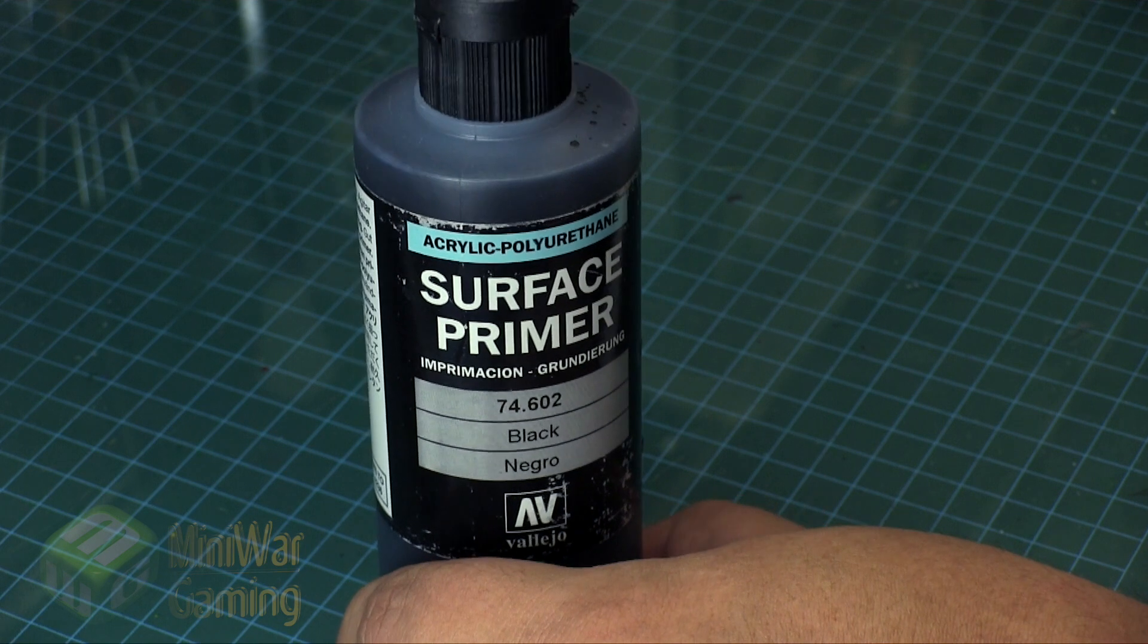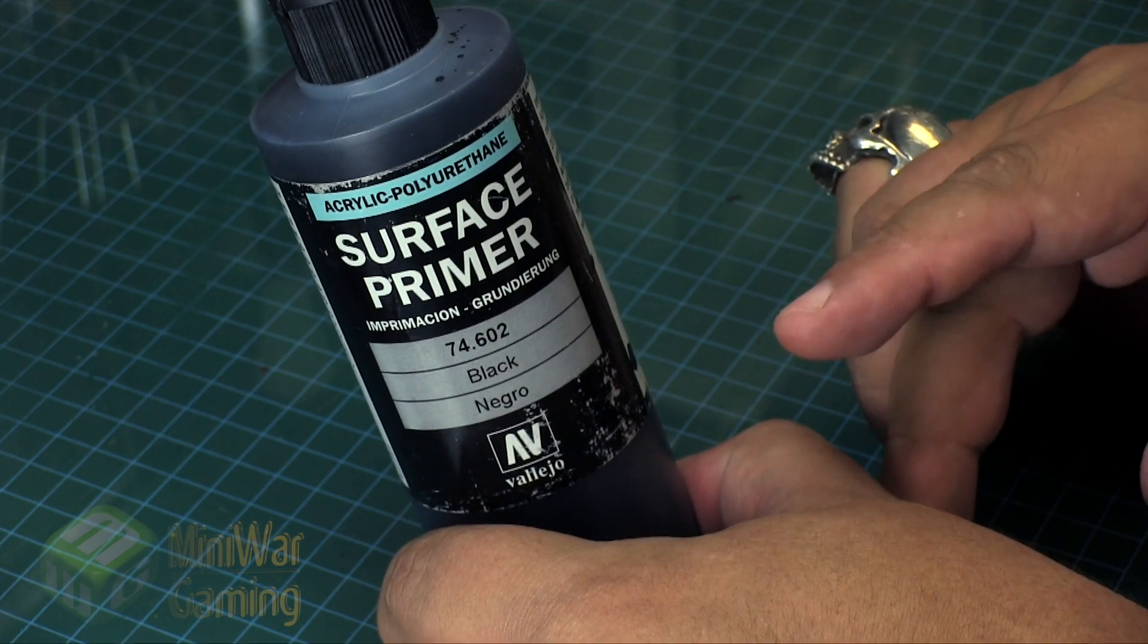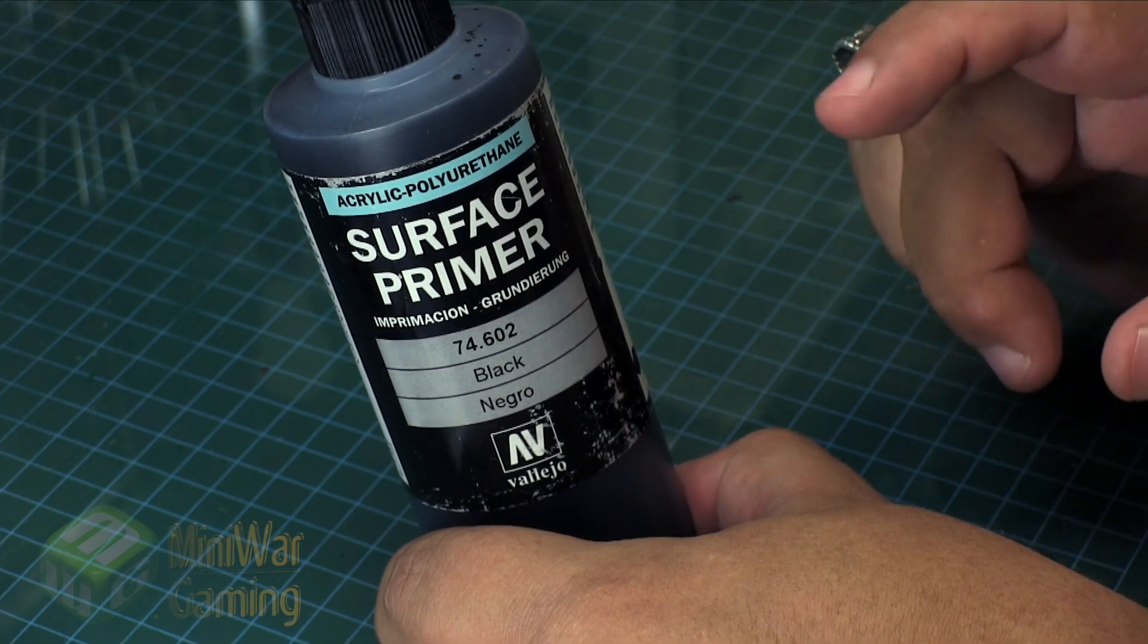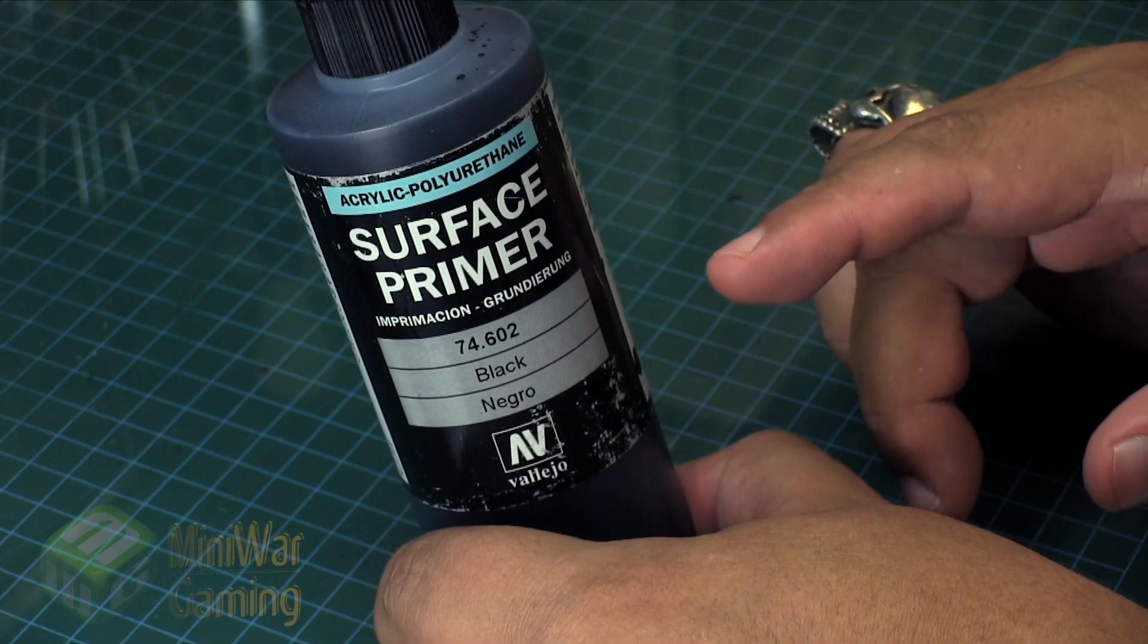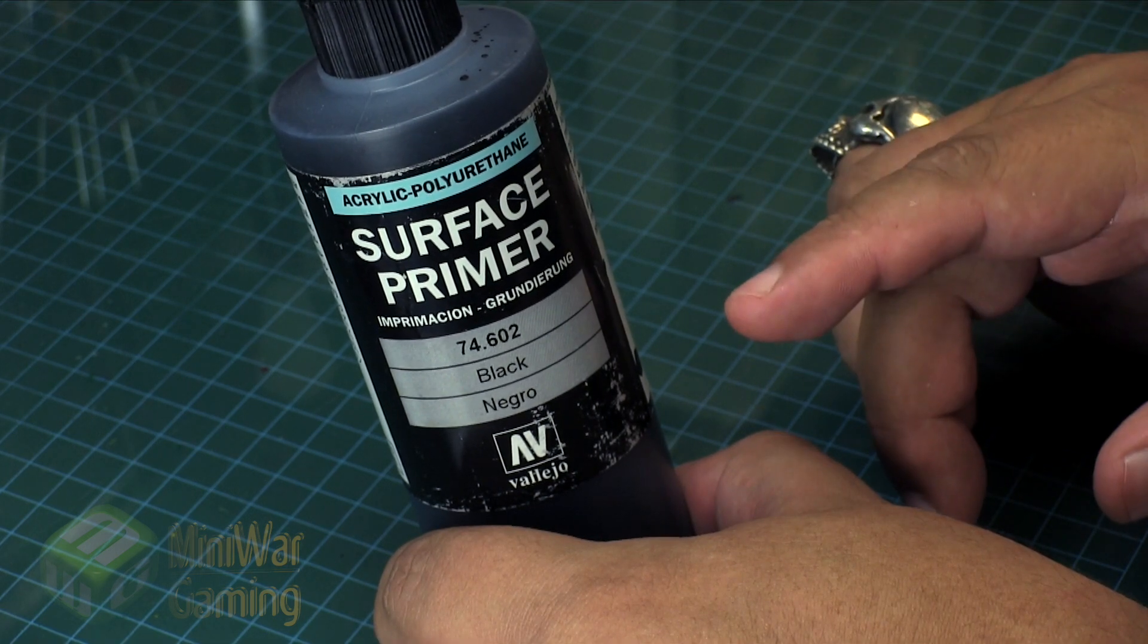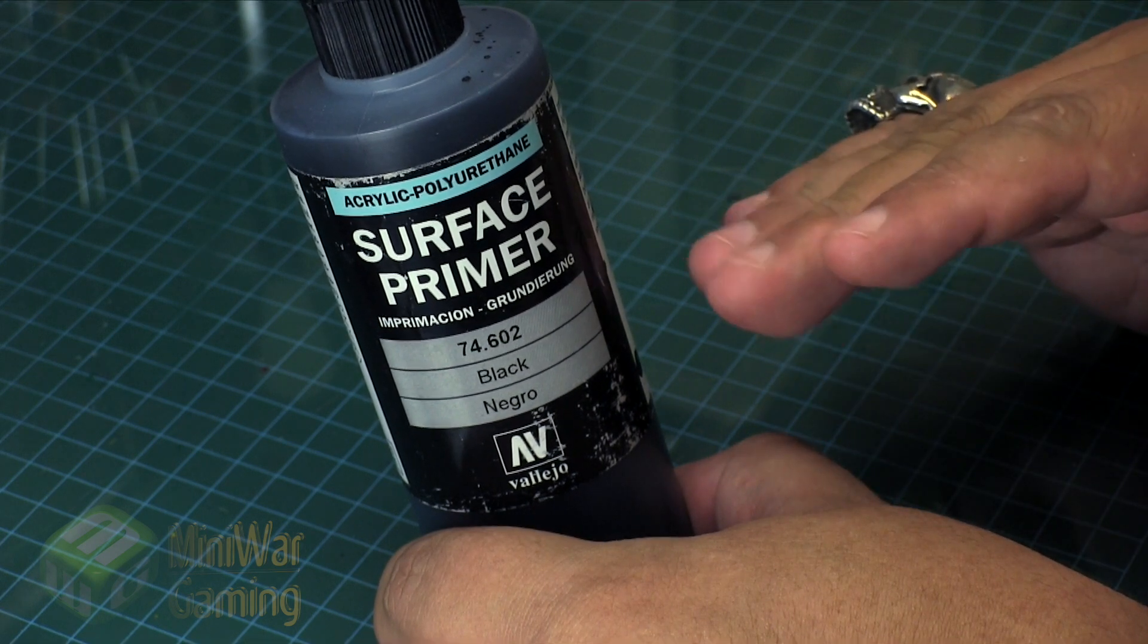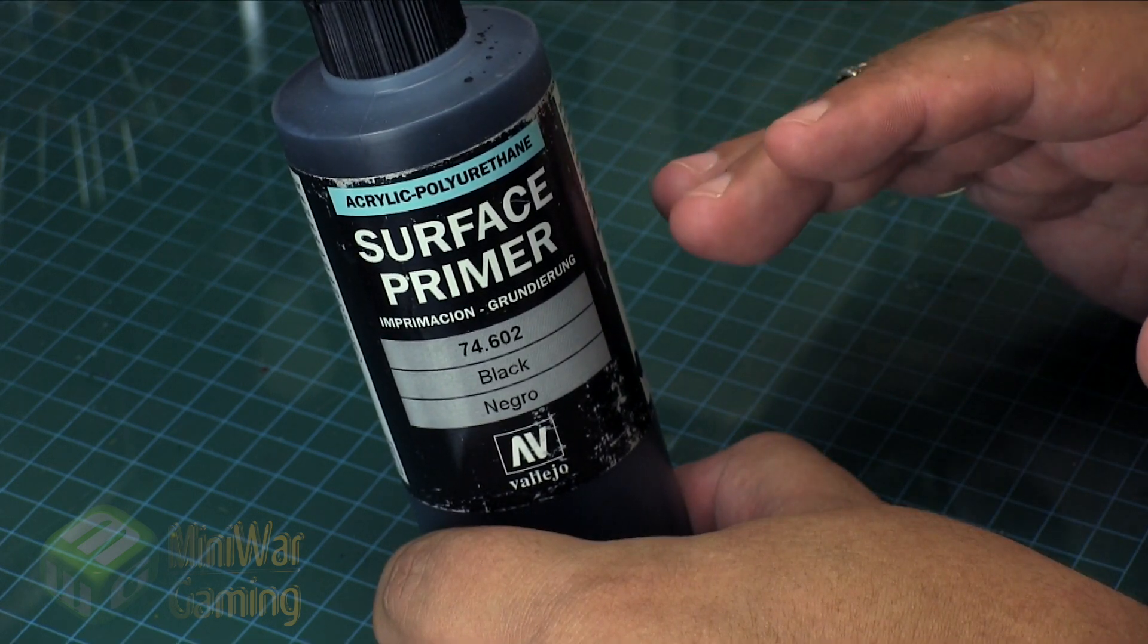Now when the primer seems a little thick and chunky, use Vallejo's airbrush thinner to thin it down just a little bit. You can use water as well, but you're better off using the airbrush thinner. It's okay if the primer does go on a little bit thinner because you can build it up.